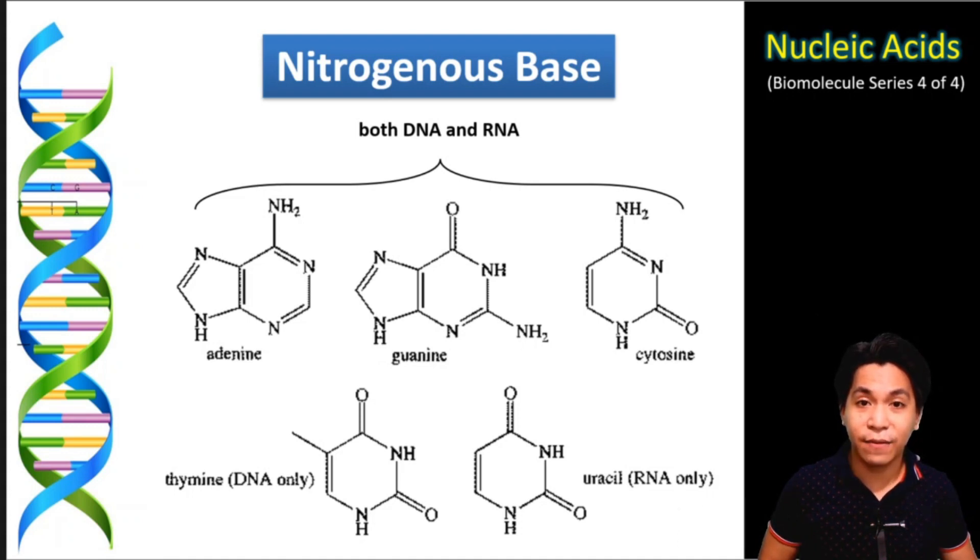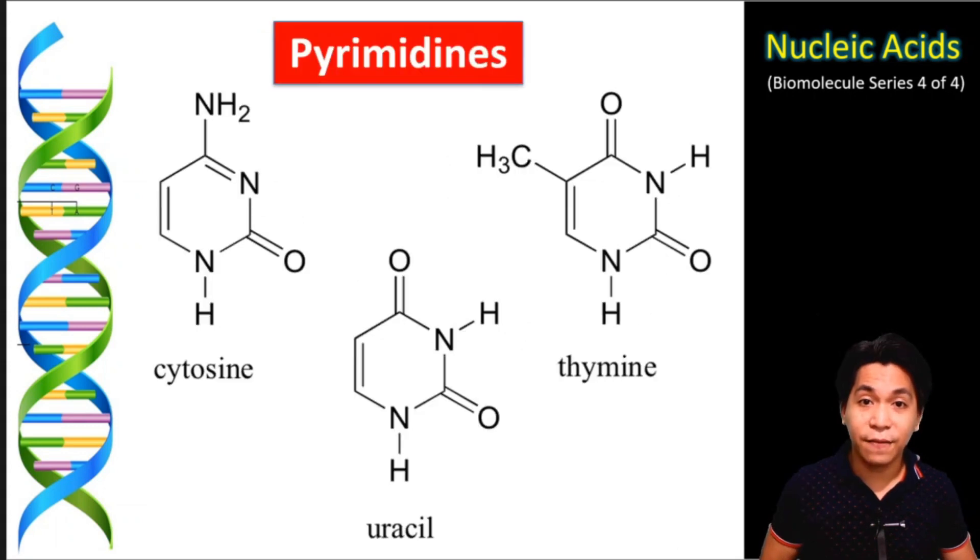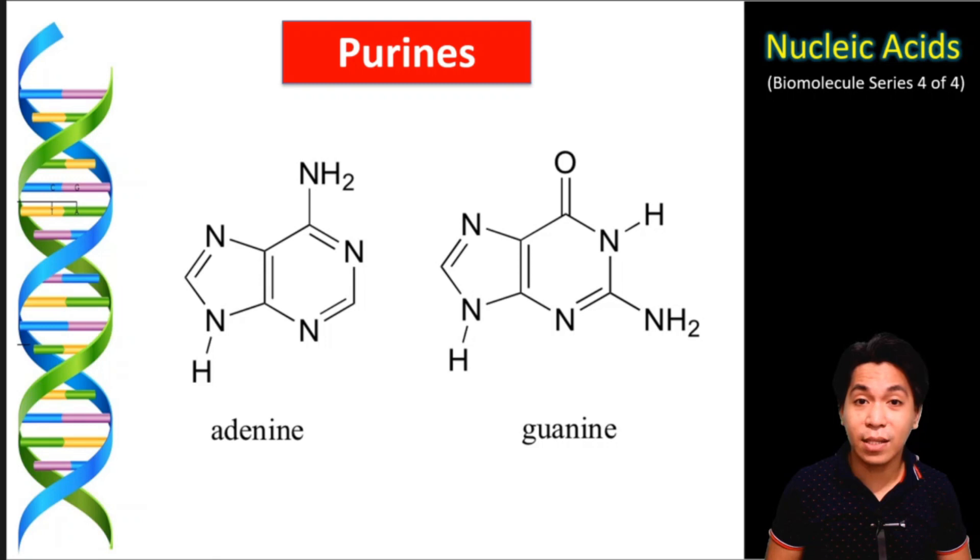Notice how these bases differ from one another. We can actually group them into two. The first type of these bases is what we call the pyrimidines. Pyrimidines are nitrogenous bases which has a single ring which includes the cytosine, uracil, and thymine. On the other hand, purines are bases which contain two rings which includes adenine and guanine.